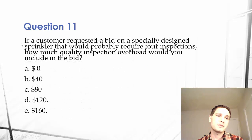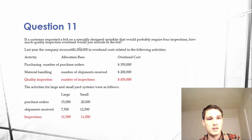Let's read the question: If a customer requested a bid on a specially designed sprinkler that would probably require four inspections, how much quality inspection overhead would you include in the bid? We know we're talking about quality inspection overhead, so we can see that all we have to worry about—there's all this unnecessary information.